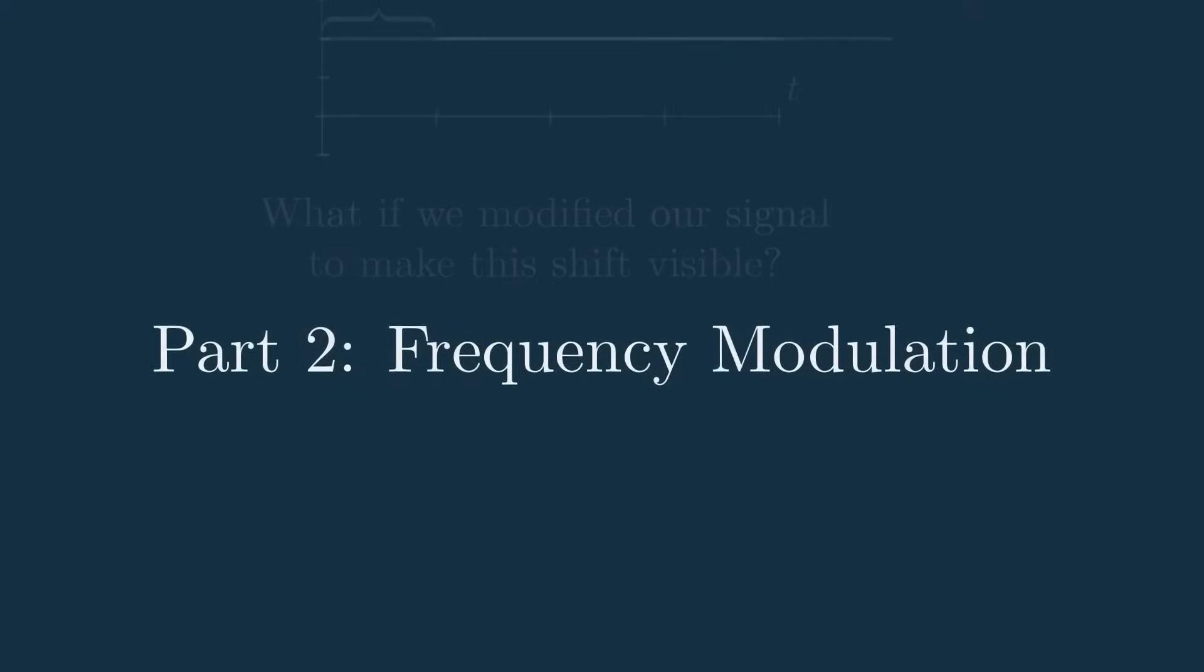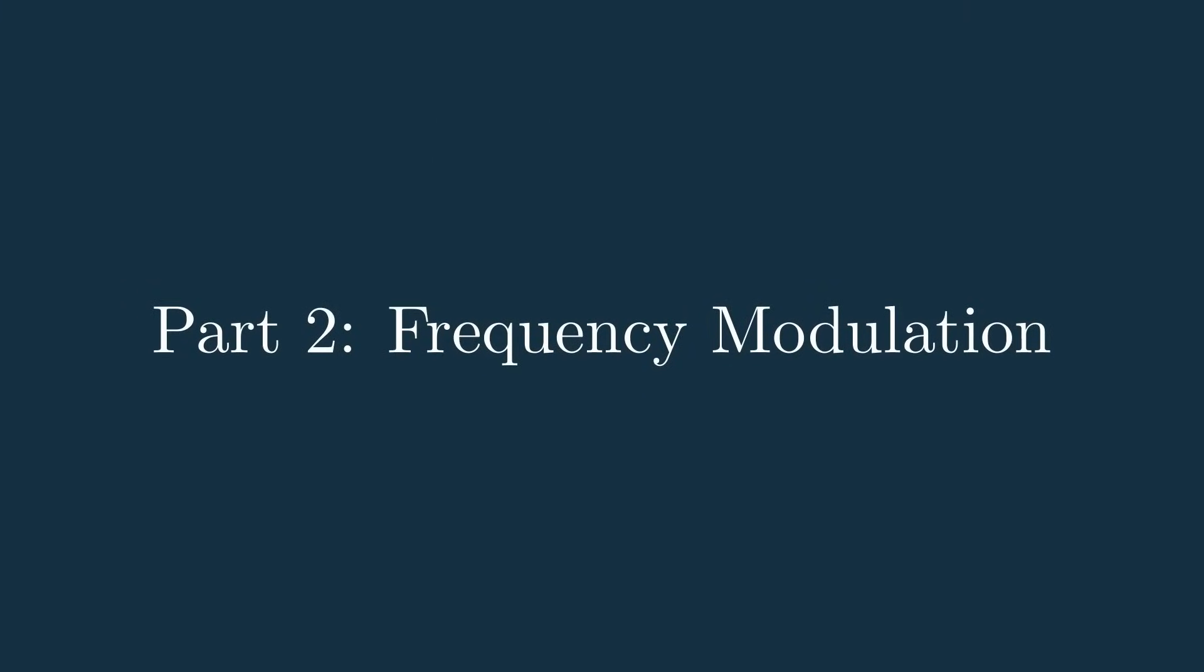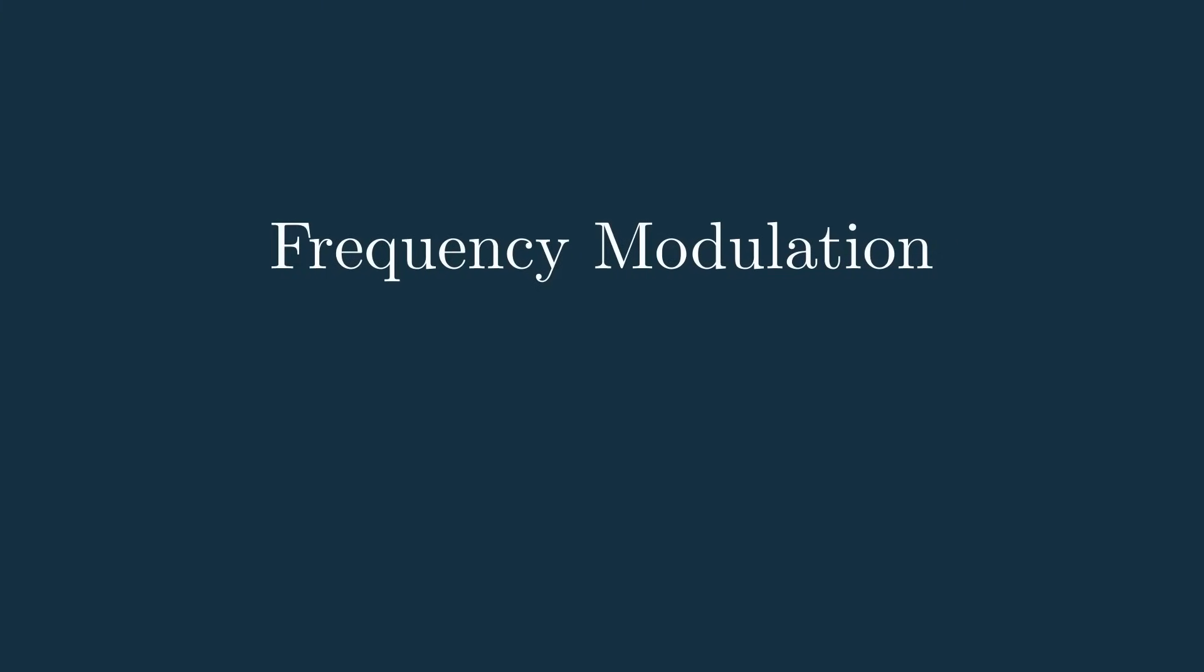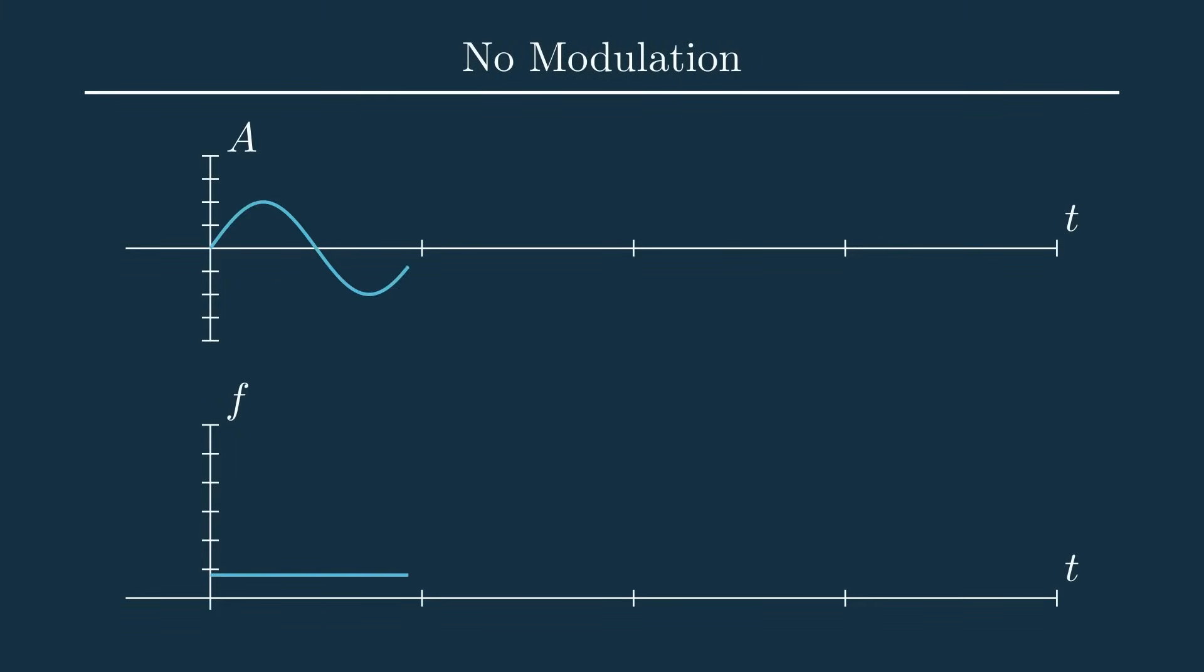Well, that's where the other part of the FMCW name is derived: frequency modulation. Frequency modulation may sound complicated, but it really just means we're changing the signal's frequency over time. So instead of the constant frequency we used previously, we can use one of a ton of modulation types,